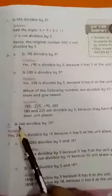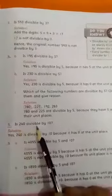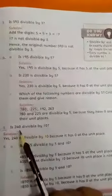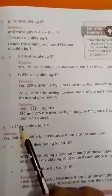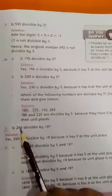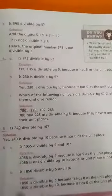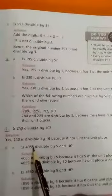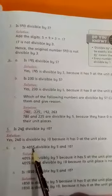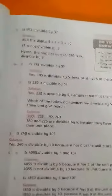Unit place means the first digit. You can see, is 240 divisible by 10? Students, can it be divided by 10? Yes. Why? Because the unit place is 0. Can it be divided by 10? No. Because the unit place is 5.